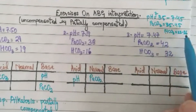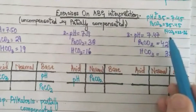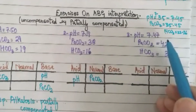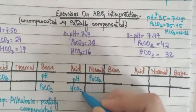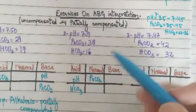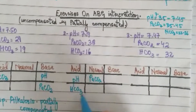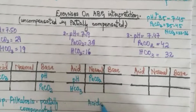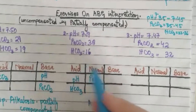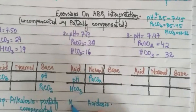Bicarbonate is 16, and the normal range is 22 to 26, so 16 is less than normal — bicarbonate is on the acidic side. So we put HCO3 on the acidic side. The overall condition is acidosis. Since it is the bicarbonate causing this, it is metabolic — metabolic acidosis.